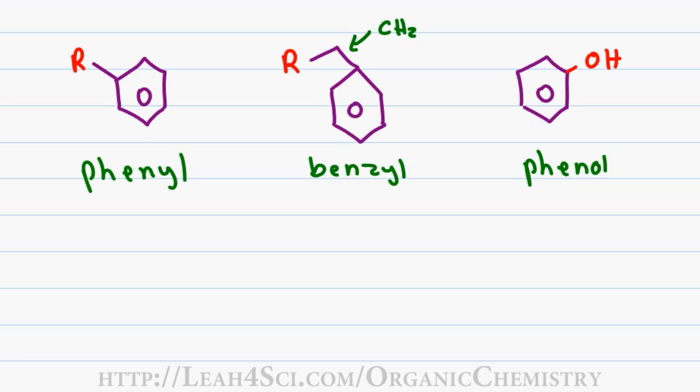Because the benzene ring is slightly complicated to draw, you may often see the substituents simply listed as C6H5 for phenyl which is simply a benzene group or C7H7 for benzyl which is a toluene group.